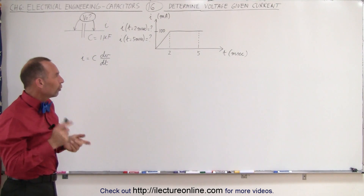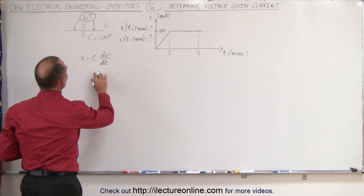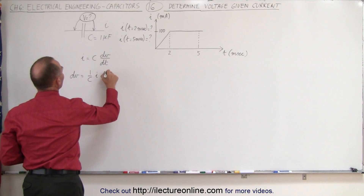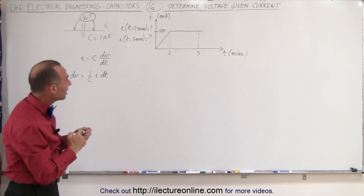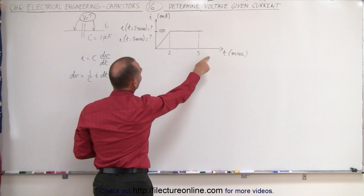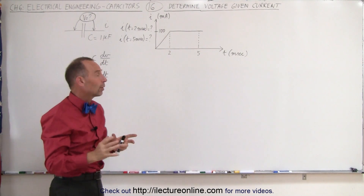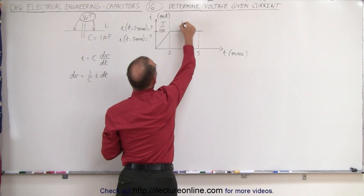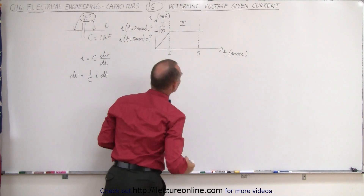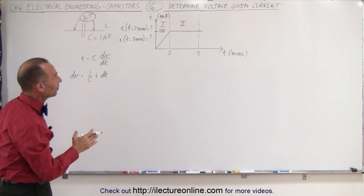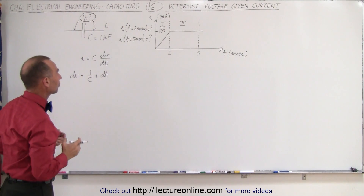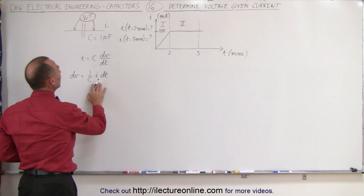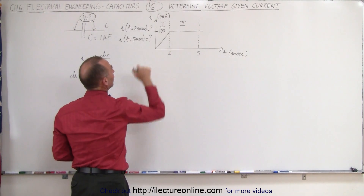Since we're trying to find the voltage, we need to solve this equation for V. We can write that dV is equal to 1 over the capacitance times the current times dT. Notice that since the equation of the current as a function of time changes after 2 milliseconds, we want to calculate the voltage twice — once for region 1 which ends at 2 milliseconds, and once for region 2 which ends at 5 milliseconds.